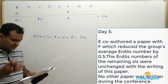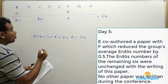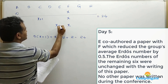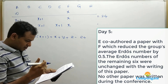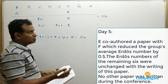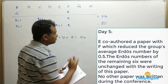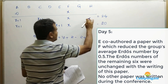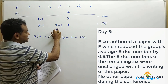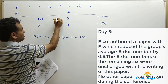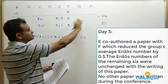On the fifth day, E co-authored a paper with F, which reduced the group's average Erdős number by 0.5. So E's value also changes to X plus 1. The average is now 2.5, so 2.5 times 8 equals 20 — the new total sum. The difference between the previous sum of 24 and 20 is 4, meaning E must have been 4 greater than X plus 1 before, so E's original value was X plus 5. One of Y or Z changed to X plus 1.